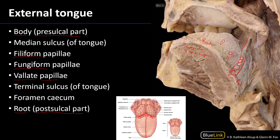The area of the valate papillae is actually more innervated by the glossopharyngeal nerve, cranial nerve nine, which is the afferent and provides special sensory for the root of the tongue as well. There are also some scattered areas of the root of the tongue and oropharynx that are innervated by cranial nerve ten, the vagus nerve.